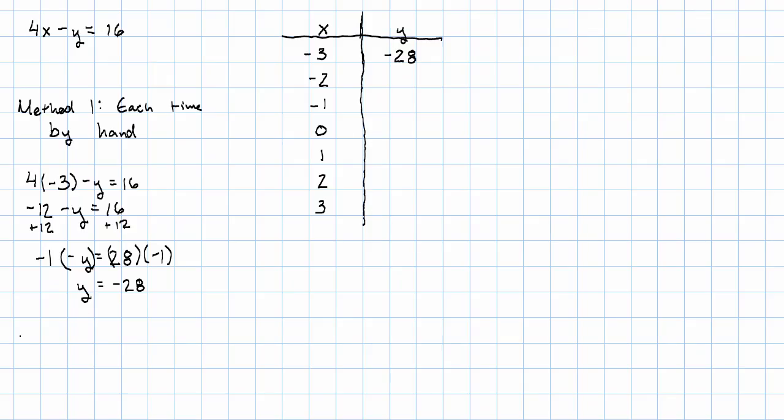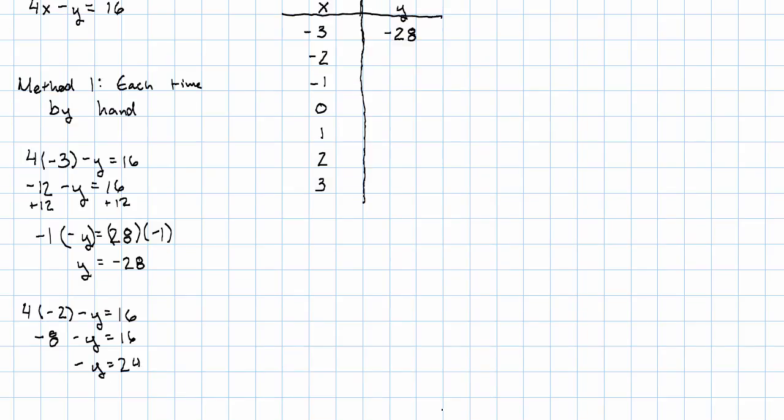Now we plug in x equals negative 2. 4 times negative 2 minus y is 16. Negative 8 minus y is 16. So we can add 8 to both sides, negative y is 24. Multiply both sides by negative 1, we get y is negative 24.